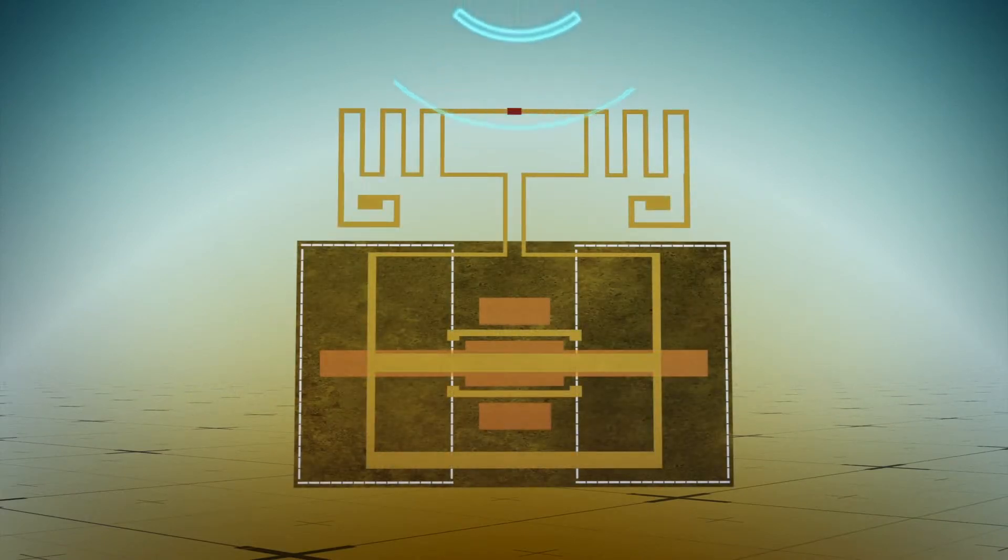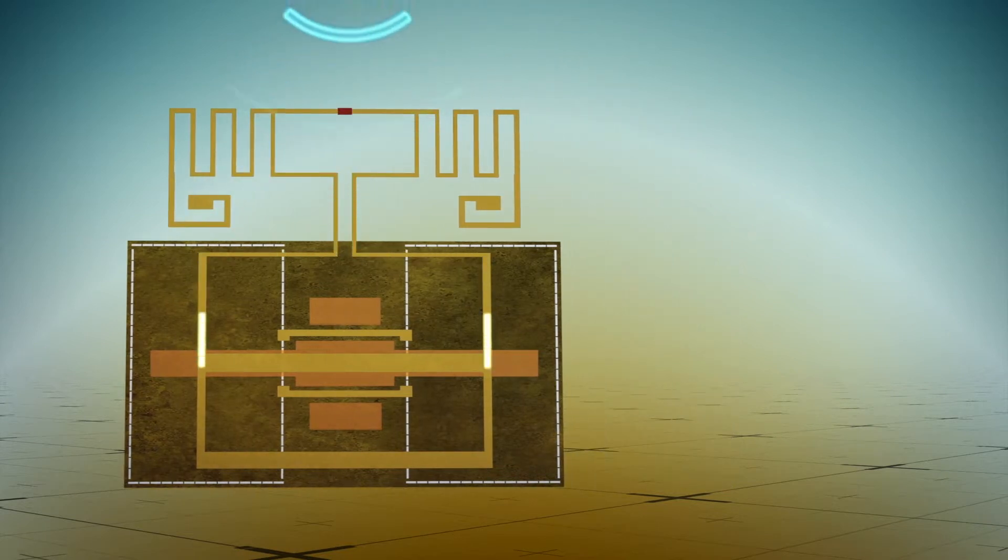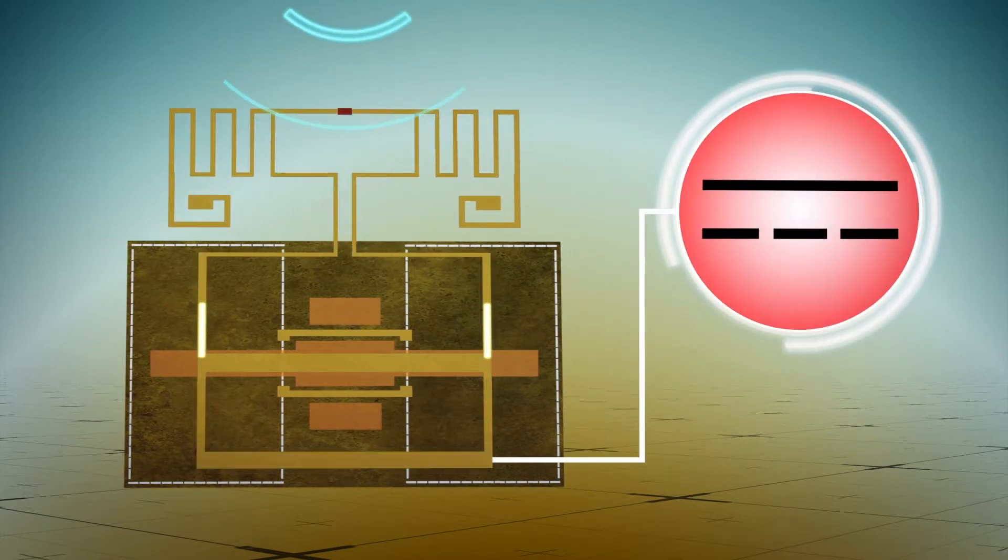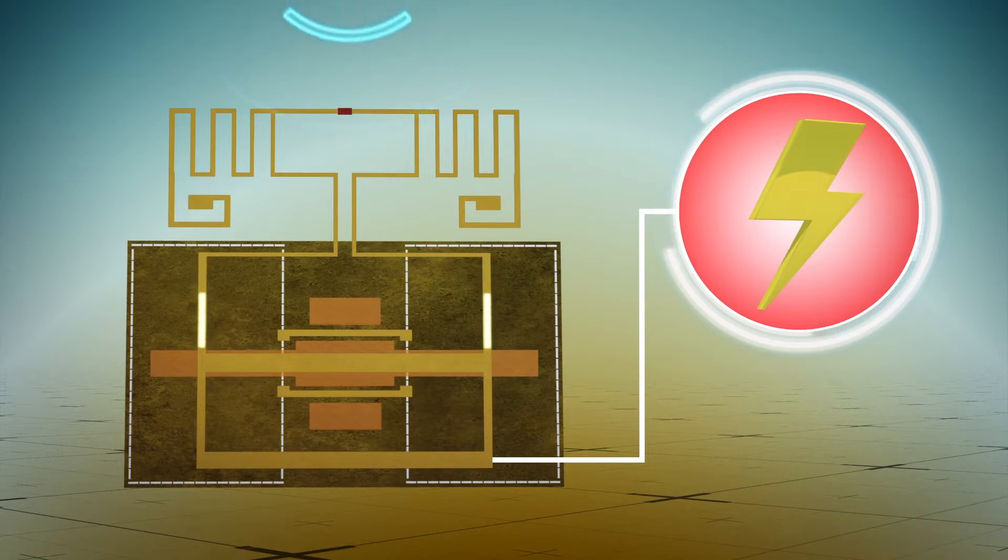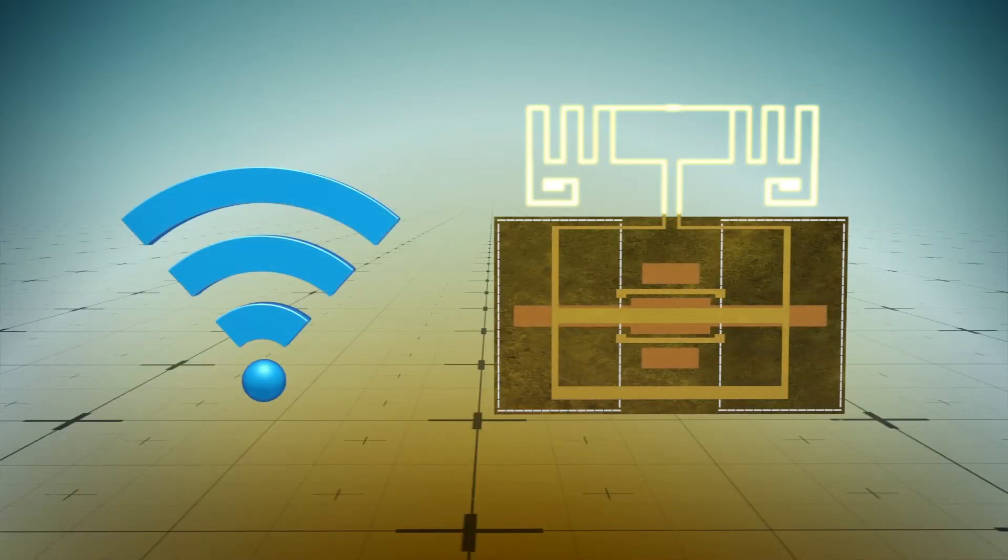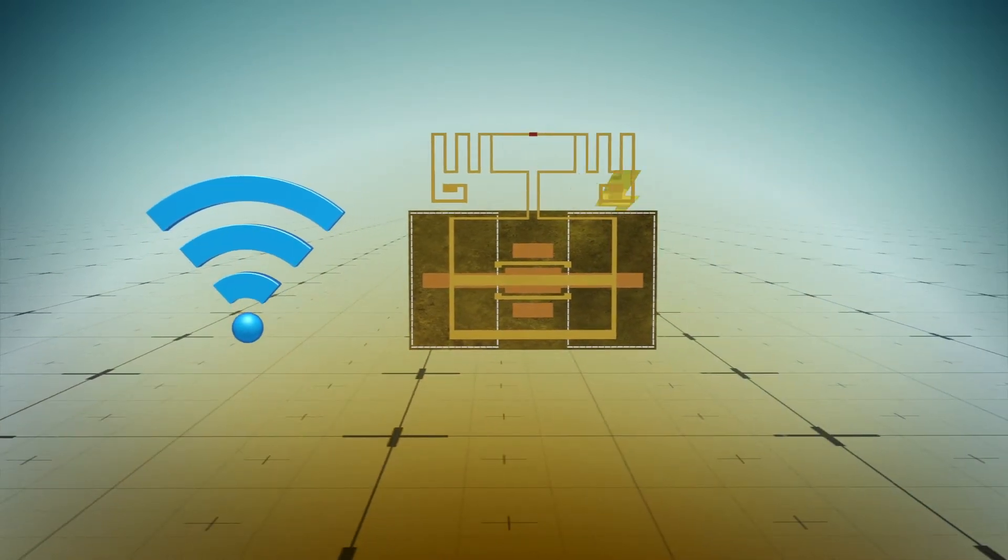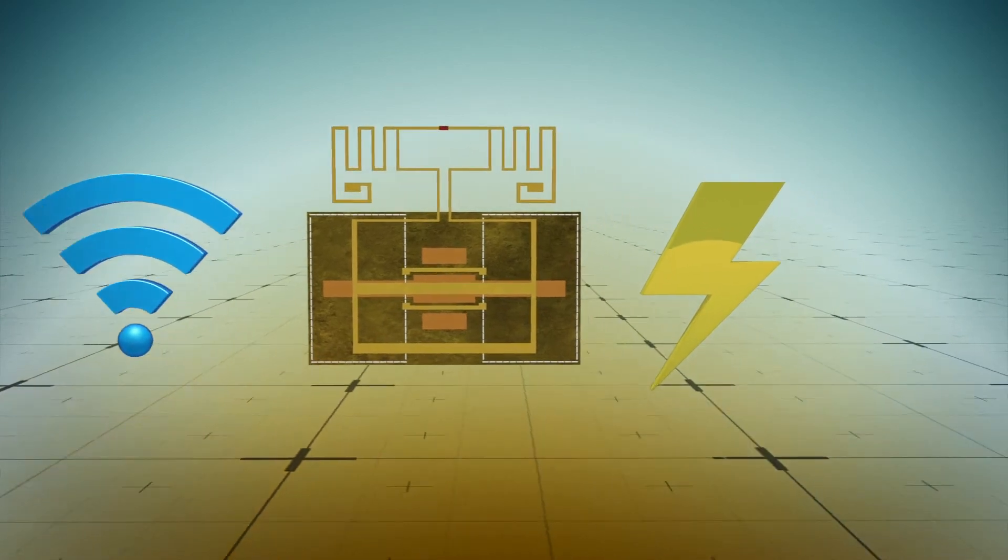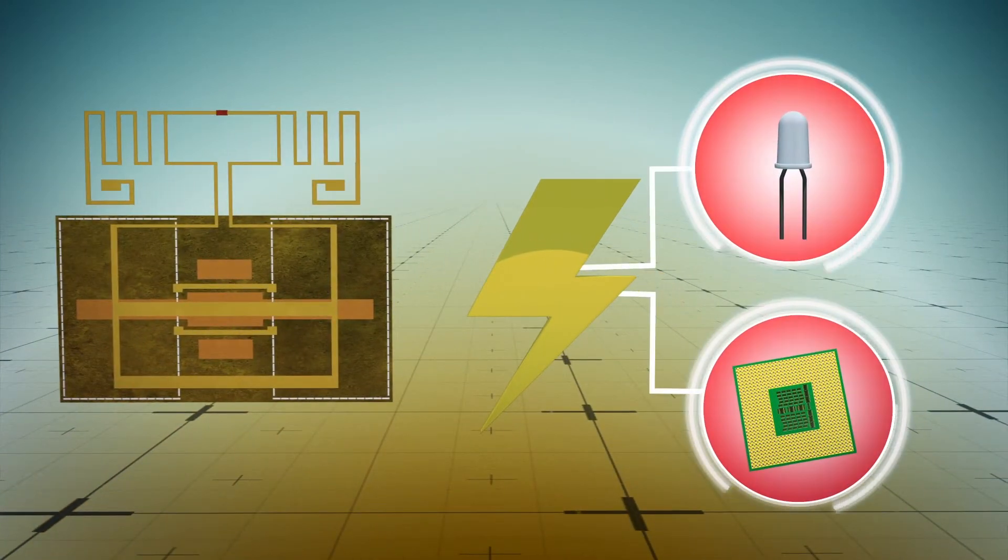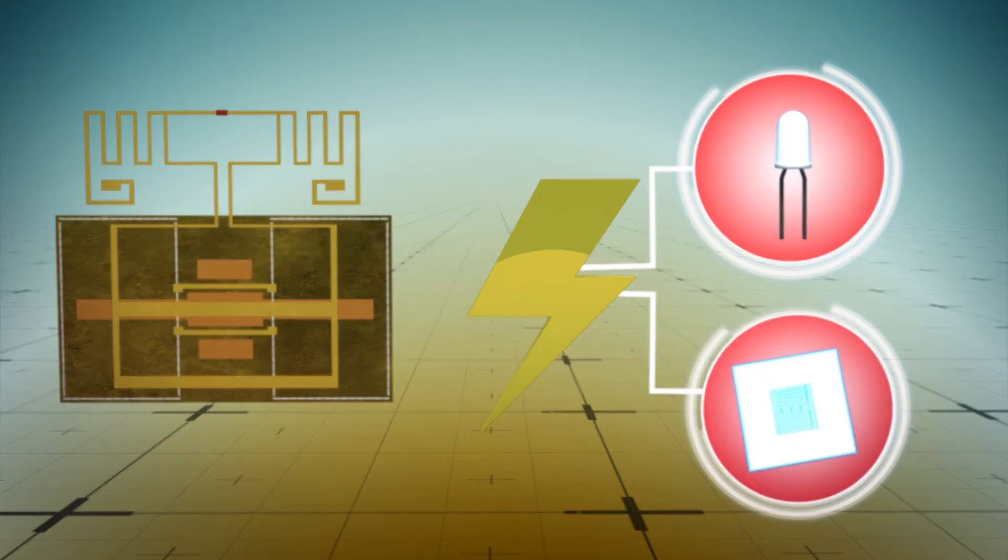Electromagnetic waves like Wi-Fi are captured via the device's radio frequency antenna and then converted into direct current. The rectenna produced 40 microwatts of power when exposed to typical Wi-Fi signals of around 150 microwatts, enough to power an LED or silicon chips.